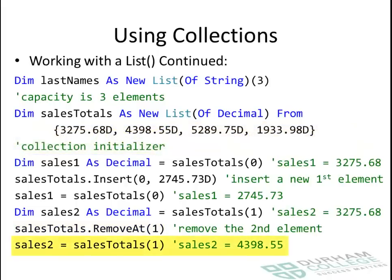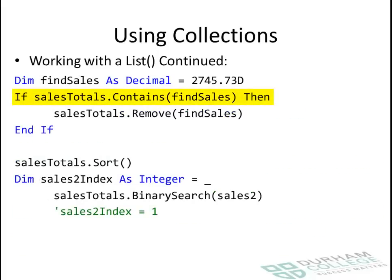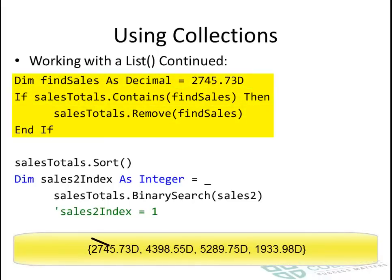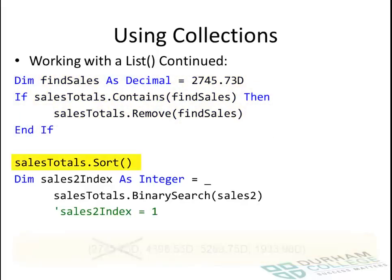Right now, sales 2 has the value of 4,398.55. Here we're using the contains method mentioned earlier to find a certain value. If this find sales value exists, then it's going to remove it. As it happens, it does exist — it's the first thing in the list — so that value is being removed from the start of the list. Then the list is sorted, which changes things.